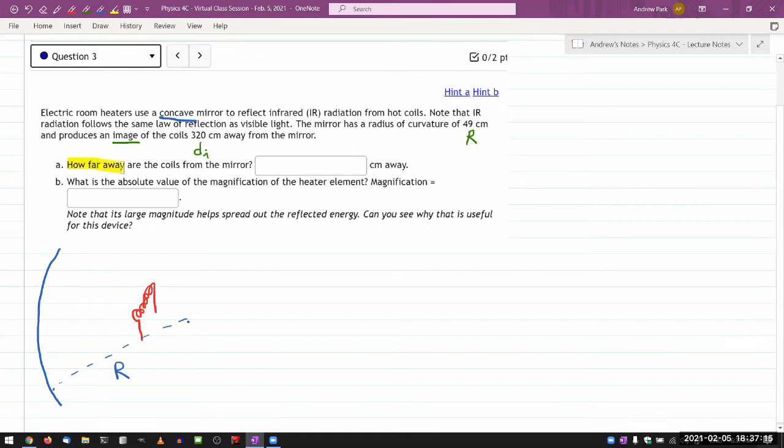So one information that's not given, but it is in fact what the question is asking: How far away are the coils from the mirror? The question is asking, what is my object distance? So let me label that. That's my object distance.